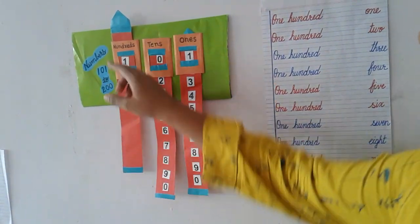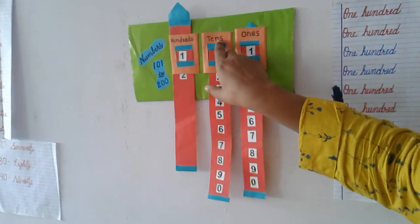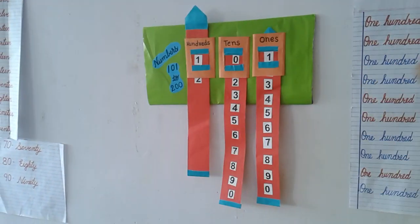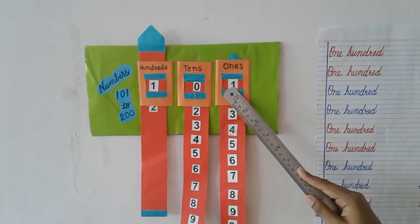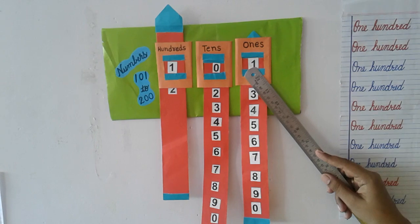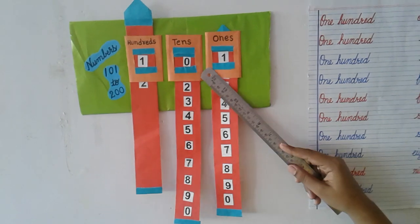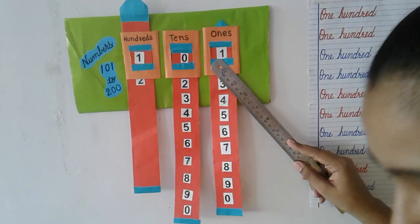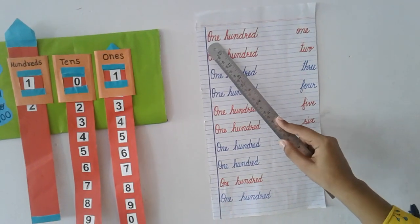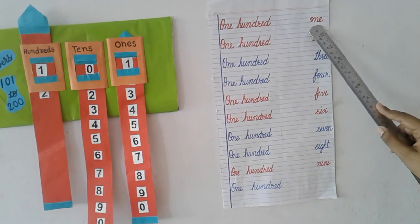Student, let's do one activity. Here you can see ONES, TENS, HUNDREDS. You can see number 100 and 1. So in your rough notebook you have to write the spelling of 101. Have you written the spelling of 101? Now see here is the spelling of 101: ONE HUNDRED ONE.